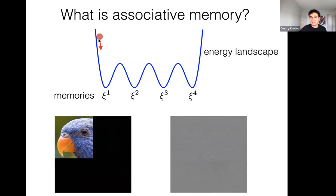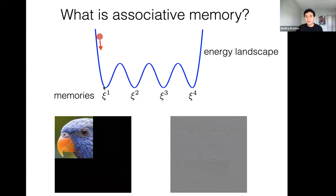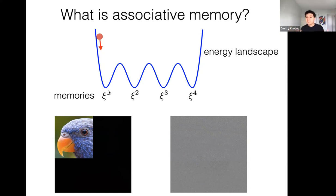The reason these vectors are called memories is that the whole dynamical relaxation into one of the local minima is the process of memory recall. The initial state is a hint you give to the Hopfield network, and the final state is the whole memory retrieved from the synaptic weights. This idea is called associative memory because the initial and final states of the dynamical trajectories are associated with each other through this continuous relaxation. Below I'll illustrate conventional use cases from the 80s and 90s.